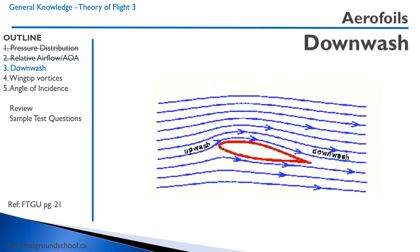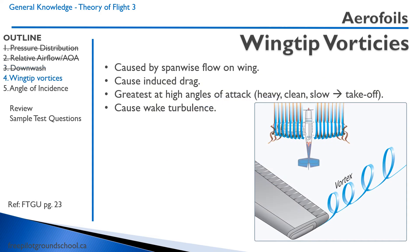Air flowing over a wing has upwash and downwash. Upwash is ahead of the wing and downwash is behind the wing. When the airflow moves outward under the bottom of the wing and inward along the top of the wing, when this airflow hits the end of the wing, it curves around forming a vortex. This causes induced drag, and it's greatest at high angles of attack when you are heavy, clean, and slow — such as takeoff. This is the cause of wake turbulence, which we'll learn more about in your flight operations modules.